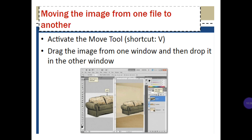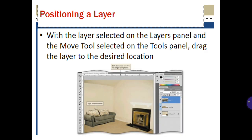Moving an image from one file to another: activate the Move tool and drag the image from one window and drop it in the other window. Positioning a layer: with the layer selected on the layers panel and the Move tool selected on the tool panel, drag a layer to the desired location.